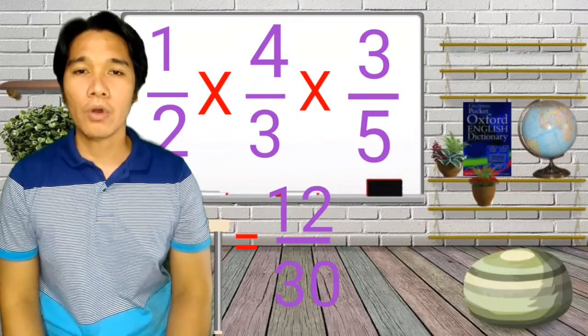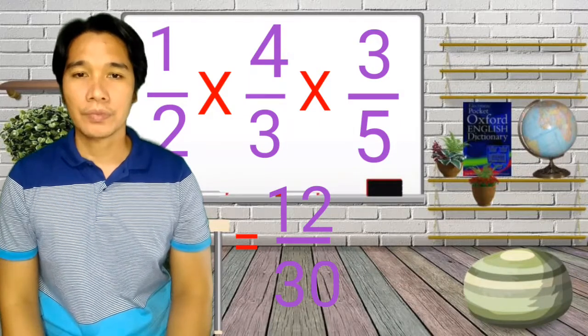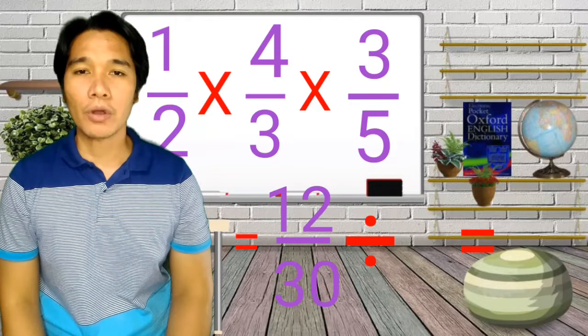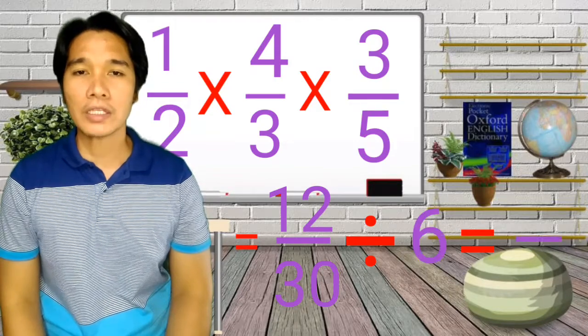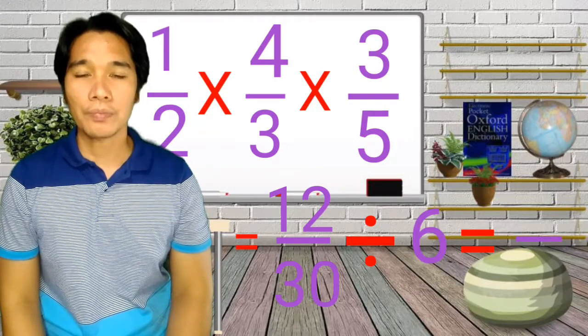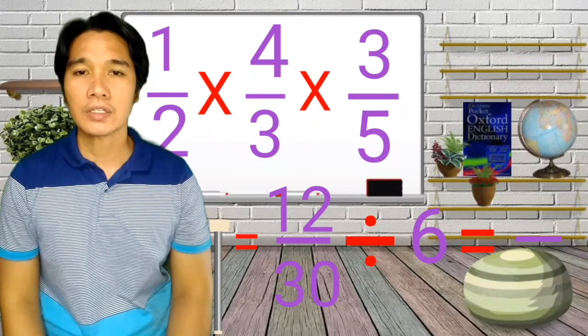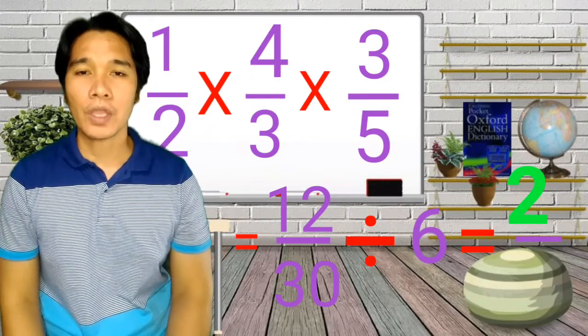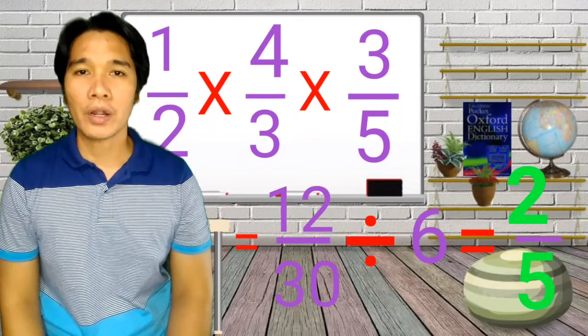So, our answer is 12 over 30. Then, we are going to simplify our answer. So, by dividing both numerator and denominator by 6. So, 12 divided by 6 is 2. Then, 30 divided by 6, we have 5. So, our final answer is 2 fifths.